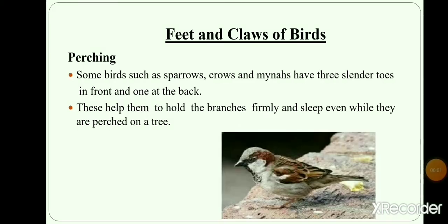Perching birds. Crows, sparrows and mynas are perching birds. They have three toes in front and one at the back. They use the front toes like fingers and the back toe like our thumb. Their toes go round a branch to grip it firmly. This type of claws helps them to hold the branches firmly and sleep even while they are perched on a tree.